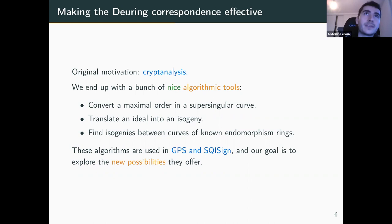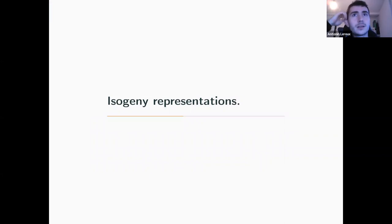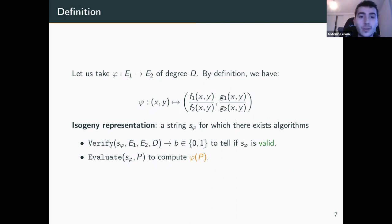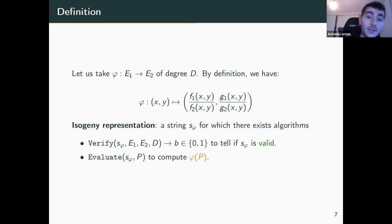The goal of this paper was exploring new possibilities and pushing the limits of what we know how to do with those tools. To understand how we achieved that, we need to talk about isogeny representations. Going back to the definition of an isogeny between two curves E1 and E2 — these are rational maps, so I can give defining polynomials F1, F2, G1, and G2 which define my isogeny. A representation is basically a string for which there exist two algorithms: a verification algorithm and an evaluate algorithm.